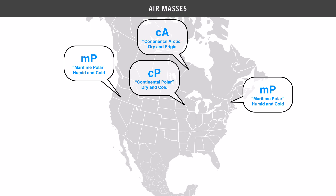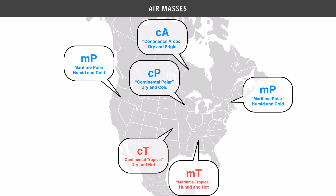Let's take a look at some of the warmer air masses that affect the United States, starting with the continental tropical, or CT, air masses that move northeastward from Mexico. These air masses are very dry and very hot and have a major impact on the climates of Texas and Oklahoma. We also have maritime tropical humid, hot air masses, with the major source being the Gulf of Mexico and the South Atlantic Ocean.